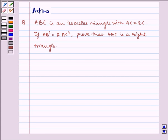Hello and welcome to the session. Let us understand the following question today. ABC is an isosceles triangle with AC equal to BC. If AB square is equal to twice of AC square, prove that ABC is a right triangle.